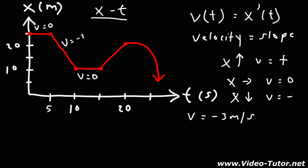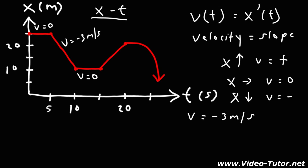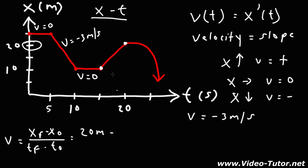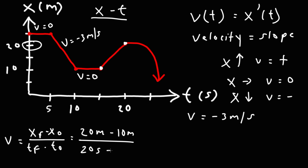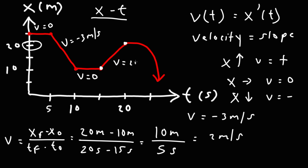We have a velocity of negative 3 meters per second for that segment. Now let's calculate the velocity of the next segment using the same formula. The final position is 20 meters and the initial position is 10 meters. T final is 20 and t initial is 15. So 20 meters minus 10 meters gives a change in position of 10 meters, and the change in time is 5 seconds. 10 over 5 gives us 2, so the velocity during this segment is 2 meters per second.